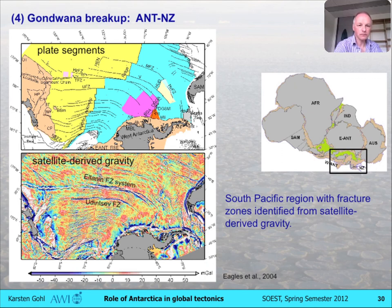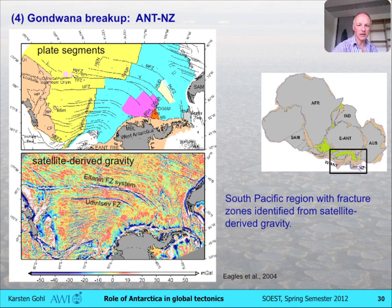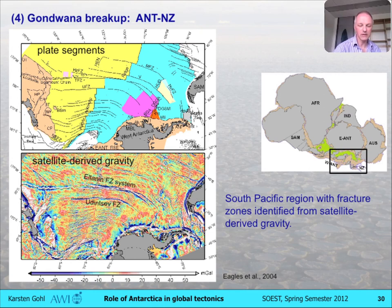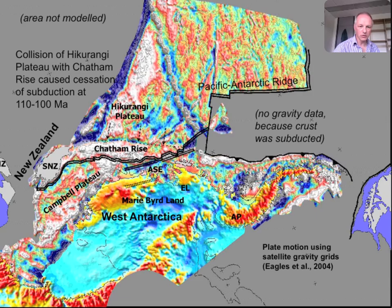On the top map you see basically all the main plate segments that played a role in this breakup, as we see them today. Graham Eagles and people of our group did a quite detailed reconstruction a couple of years ago between Zealandia and West Antarctica, basically using fracture zones as the main guide and then doing a pole rotation inversion based on fracture zone lineaments and the best fit of conjugate margins. Let's zoom into the situation at 90 million years. What you see in color is the present-day bedrock topography map. The proto-Pacific margin along Gondwana was a long, enduring story of continued subduction and collision.